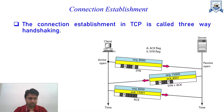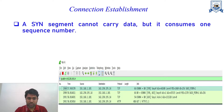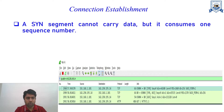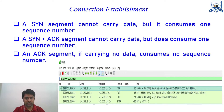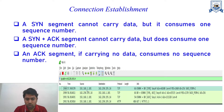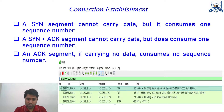The SYN segment cannot carry data, but it does consume a sequence number because of the sequence negotiation. Similarly, the SYN+ACK segment cannot carry data but consumes a sequence number due to its SYN component. The third step — the client's ACK — carries no data and consumes no sequence number. Here is a captured screenshot of a real connection I established with Google, destination IP 142.250.195.14 (google.com).